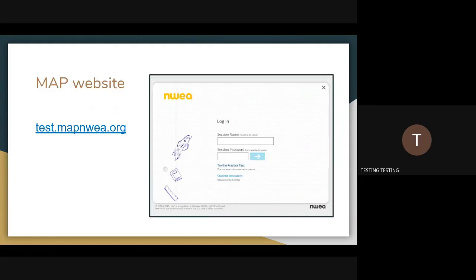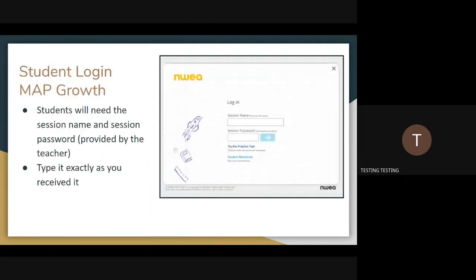The MAP website is test.mapnwea.org. Students will need a session name and password that will be provided by the teacher. They will need to be typed in exactly as it's been received.